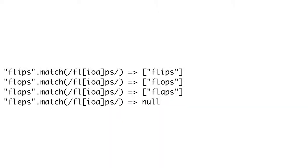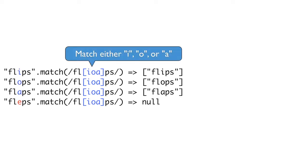You can also match out of multiple characters by using groups. Groups are defined by square brackets. Any characters placed inside the square brackets will be allowed to be used in the match. For example, if we wanted to match the words 'flips', 'flaps', or 'flops', we could use the expression F-L, then in a group I, O, and A, then P and S. Any other letter between L and P that's not I, O, or A will not allow us to match.